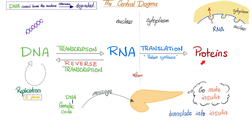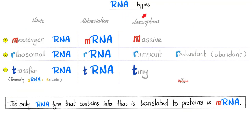So turns out these proteins are nothing but a bunch of amino acids linked together by peptide bonds. RNA types. We have the messenger RNA. We have the ribosomal RNA and transfer RNA, formerly known as sRNA, which stands for soluble. Which one is the biggest RNA molecule? The mRNA. It is massive. Which one is the most abundant or redundant or rampant? Ribosomal RNA. Which one is the tiniest molecule? tRNA.